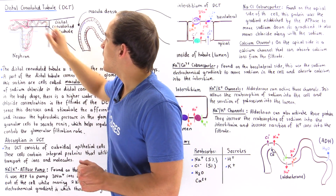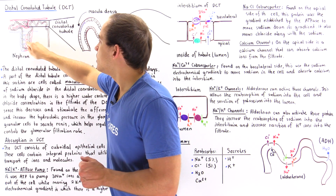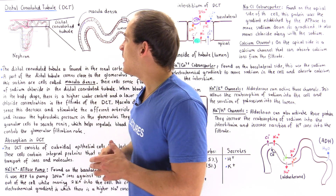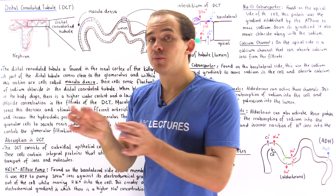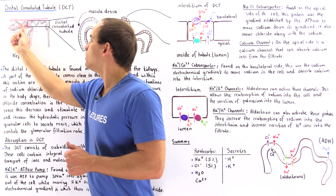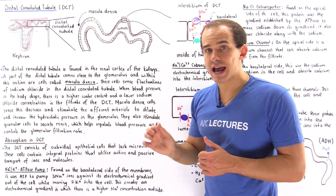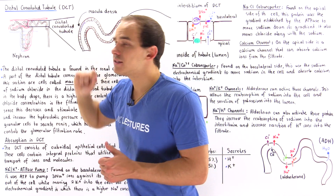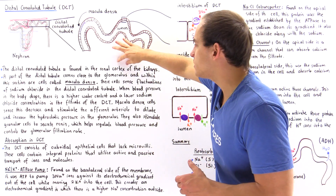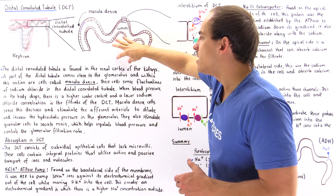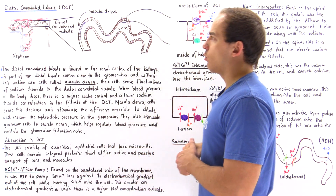The distal convoluted tubule connects the thick ascending loop of Henle to our collecting duct. Just like the proximal convoluted tubule, this section lies within the renal cortex of the kidney — which is simply the outer portion of the kidney.